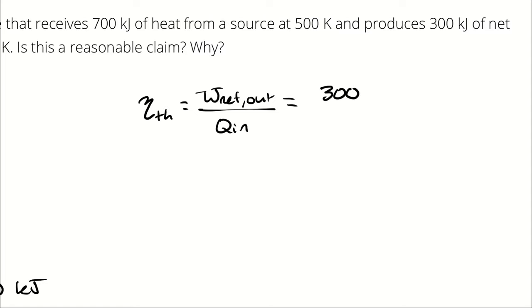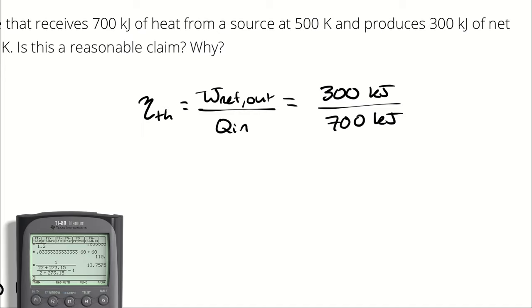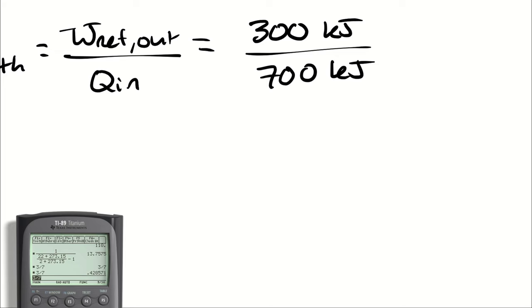Since we're producing 300 kilojoules of net work and consuming heat transfer at a rate of 700 kilojoules, that gives us a thermal efficiency of three-sevenths, which equals 0.428.